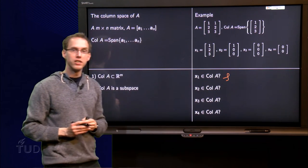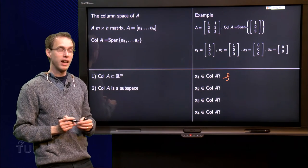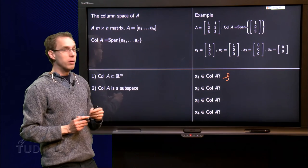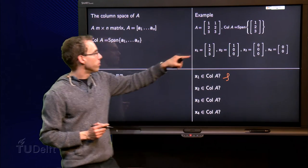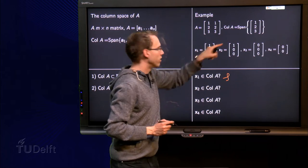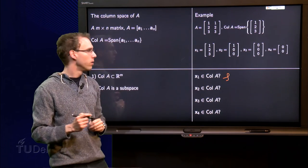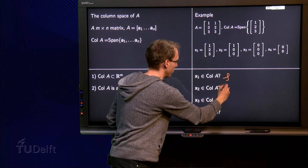x2 = [1, 0, 0]. Is [1, 0, 0] in the column space of A? Is it a multiple of [1, 2, 3]? Well, no. Because if I take 1 times [1, 2, 3] in order to get the first component right, the other two components are off. So no, x2 is not in the column space of A.